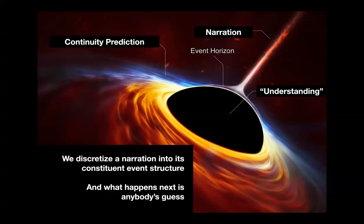We know at a process level that when we have a narration - some text, a film, a video game, or a comic sequence - it comes in through our perceptual reasoning and we are able to discretize that narration based on what's called continuity prediction failures. As we are perceiving a narrative artifact, we discretize it into its constituent event structure based on our failure to predict continuity in the events we're perceiving. When there is a shift in a specific dimension of information - for example in film, a cut is a spatial-temporal shift - that cut is a cue to the mind to archive the current event and instantiate a new event model with which to integrate incoming information.